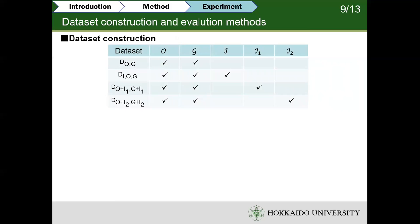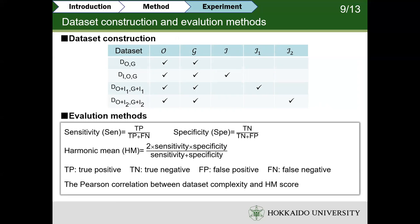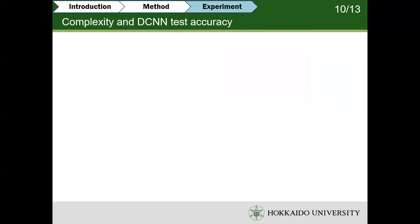Next, I'd like to explain the data site settings. DOG is a two-class data site which has O and G. DIOG is a three-class data site which has I, O, and G. Additional noise data settings were also included. We evaluate the model test accuracy with sensitivity, specificity, and the harmonic mean of these two metrics. Finally, we use Pearson correlation between data site complexity and HM score to verify the effectiveness of our method.